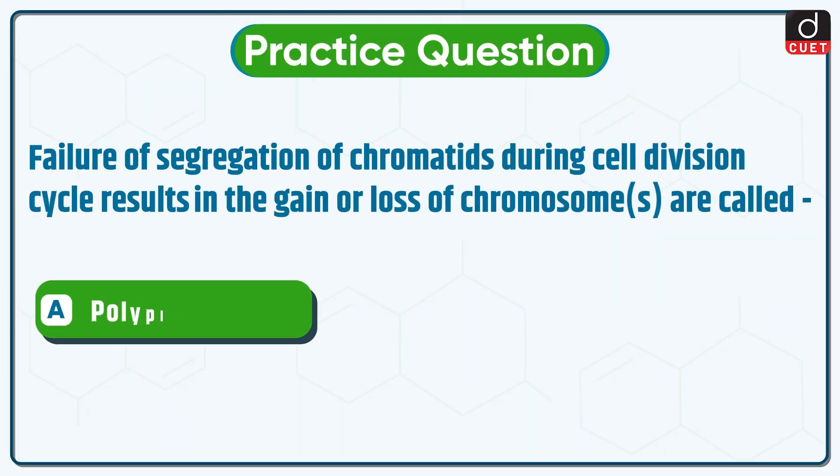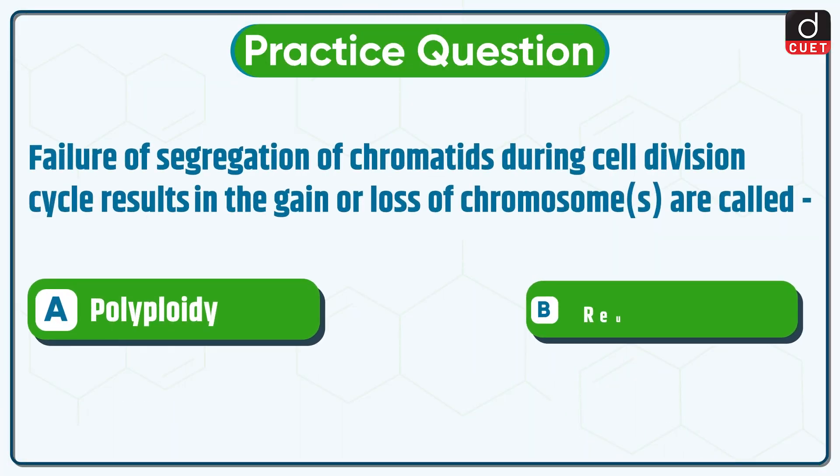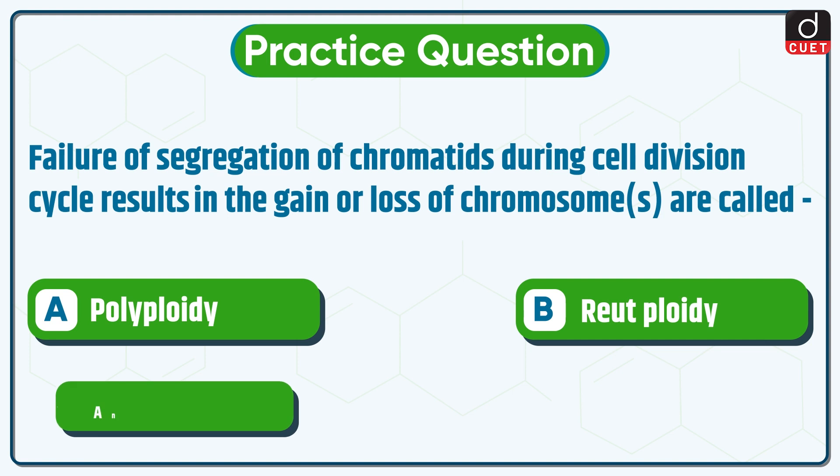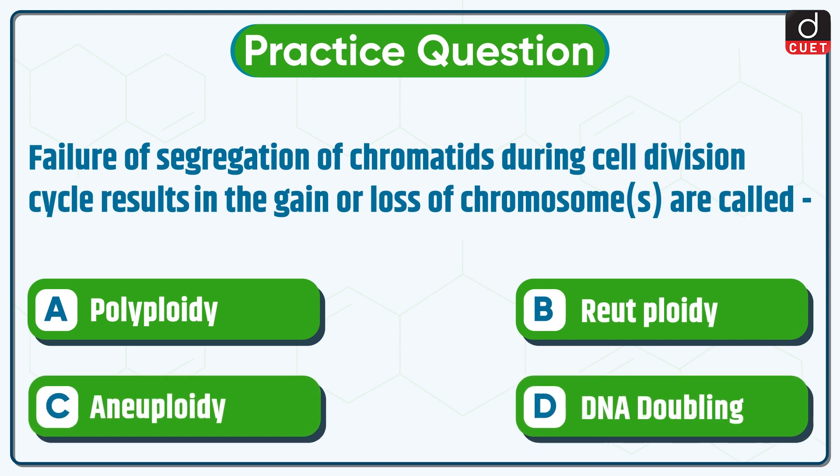Now it's time for the practice question. Failure of segregation of chromatids during cell division cycle results in the gain or loss of chromosome or chromosomes, which is called: polyploidy, euploidy, aneuploidy, or DNA doubling? Send the answer of this question in the comment section. Stay tuned for the next episode. Thanks for watching.